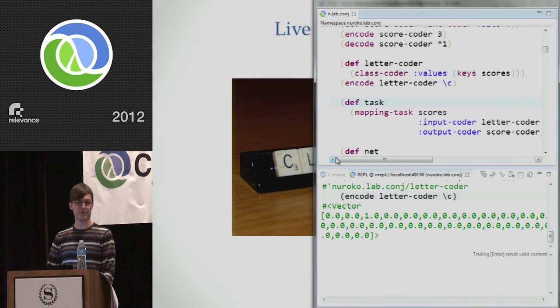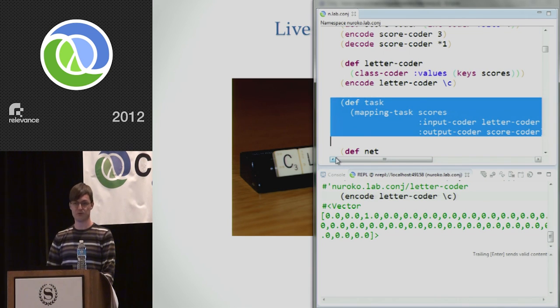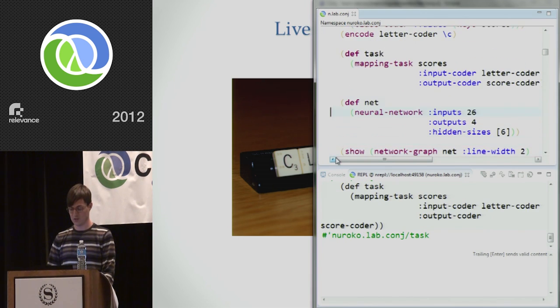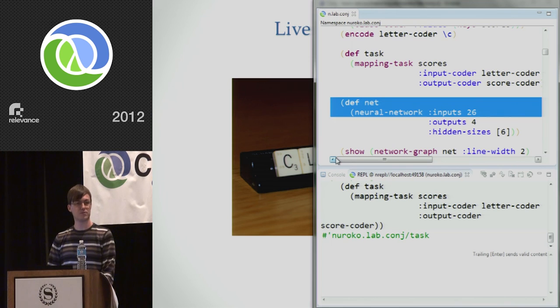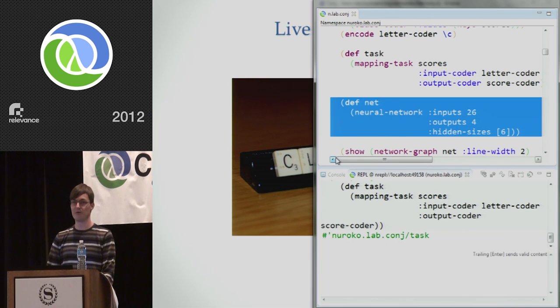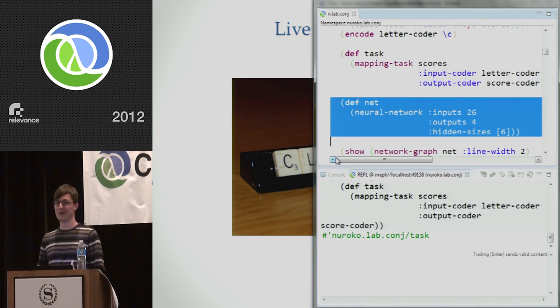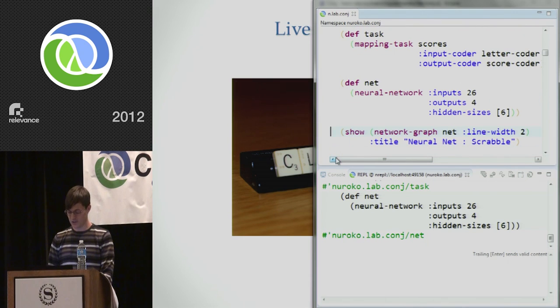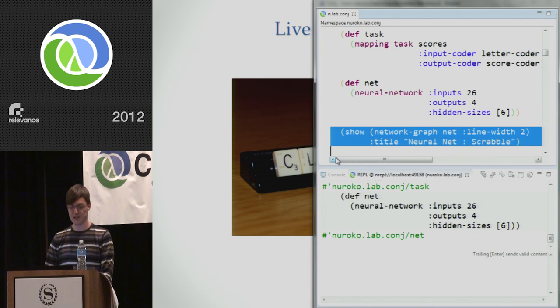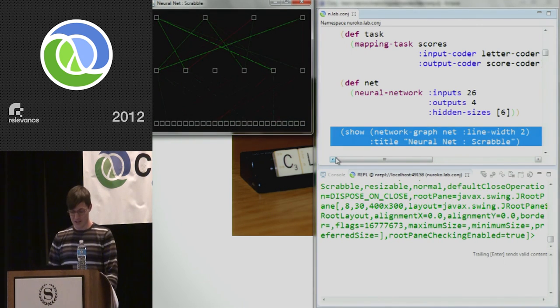And the task that we're trying to learn here is just a straight mapping task. It's mapping characters to scores. So I'm going to simply use the scores map and tell it that we want to use those two coders we've just defined. I'm also going to define a neural network. We can have 26 inputs for the 26 characters and 4 outputs for the binary score. And we can have one hidden layer with 6 units in it. And notice quite extensive use of Clojure keyword arguments here to be able to configure the different units.